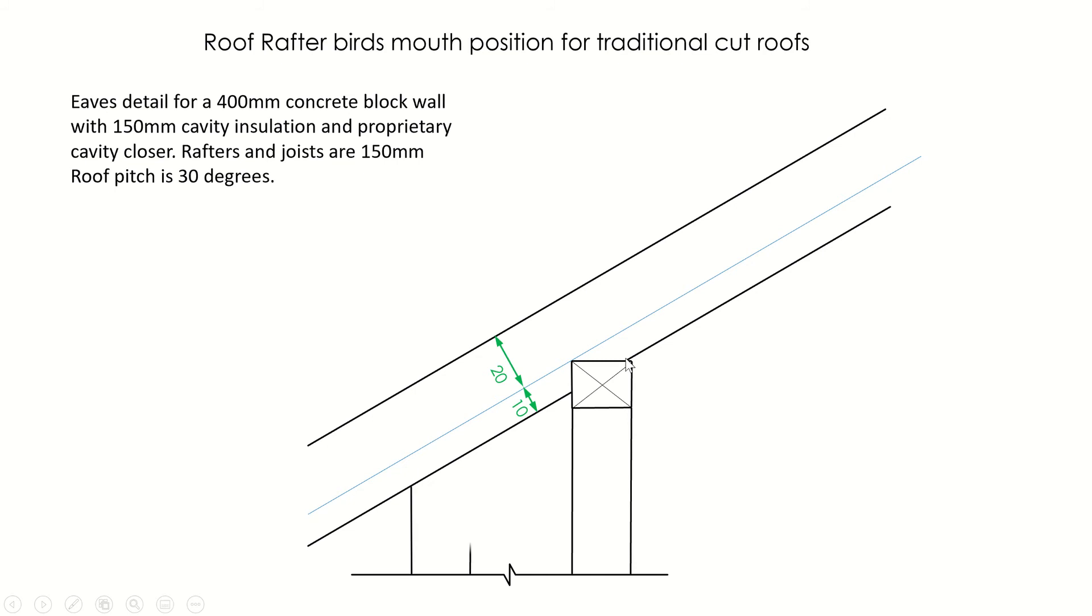This gives us the bird's mouth. When you're cutting a rafter, you take out this cut at the bottom. If that rafter was 200mm thick, you'd divide 200 by 3, then you'd have one third at the bottom and two thirds at the top. It's always that way for a traditional cut roof.